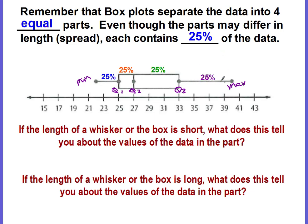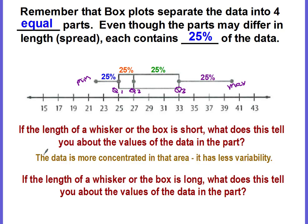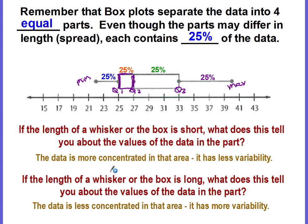Even though from Q3 to the maximum looks like it may be the longest portion, there are not more data pieces there. This isn't about individual data pieces — it's about the spread, so that upper 25% is spread out over more numbers, meaning more variability. If the length of a whisker or box is short, the data is more concentrated with less variability. If the length is long, the data is less concentrated with more variability.